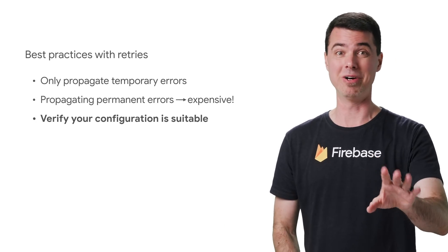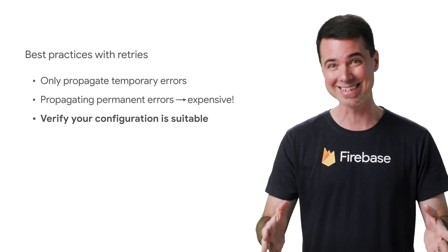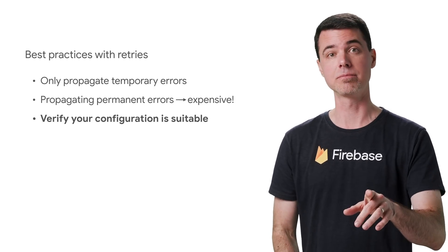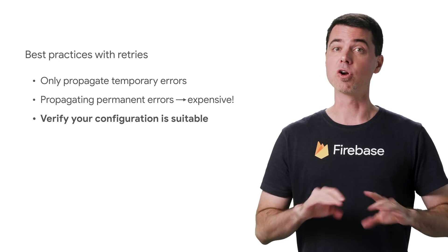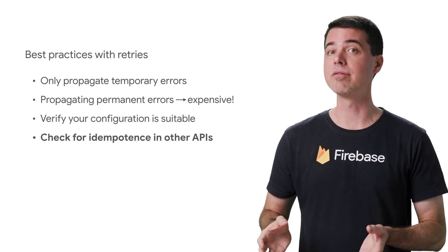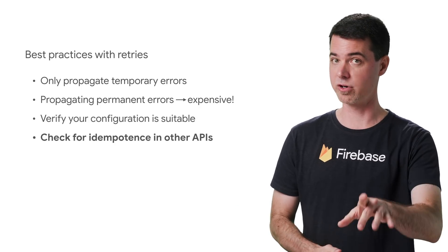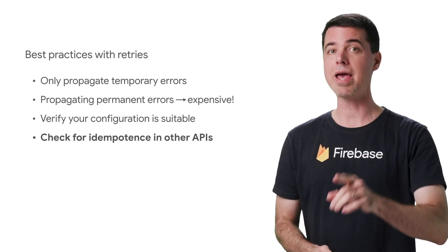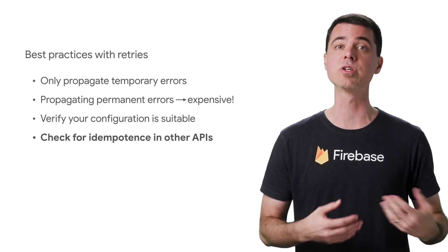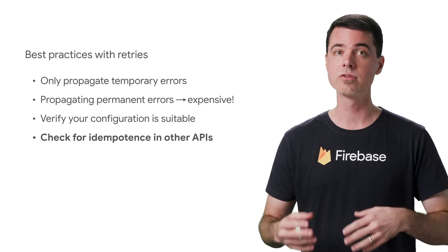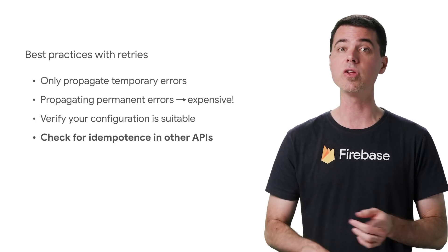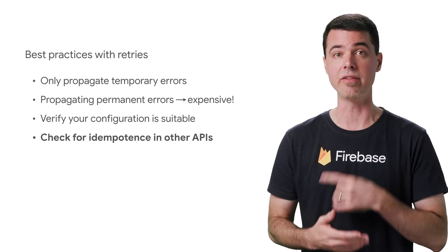This actually happened to me once, and it was a pain to diagnose. I'll talk about these function configurations in the next video. If you're calling other APIs, check to see if they also have some way to ensure idempotence. For example, the payment processor Stripe has an API that helps you ensure idempotence of its calls so your user won't get billed twice — you can pass along the unique event ID in those cases.